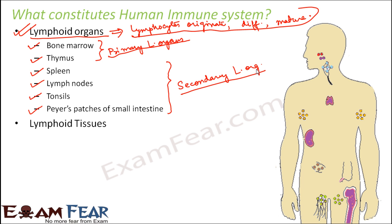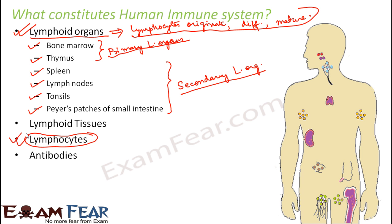There are also lymphoid tissues which form part of the immune system. The lymphocytes are like the heroes of the immune system because they do the main job. Plasma B cells produce the antibodies, memory B cells recognize the antigen, and T cells stimulate the B cells to produce antibodies. Antibodies are the chemicals produced by lymphocytes that actually fight the antigens.